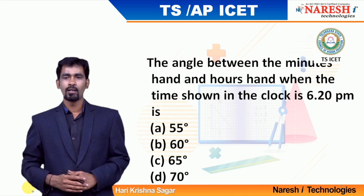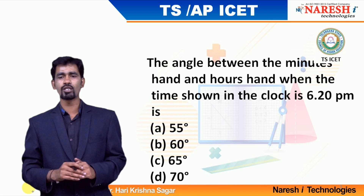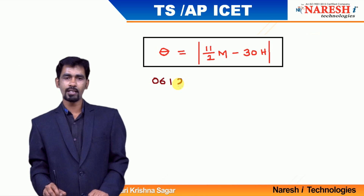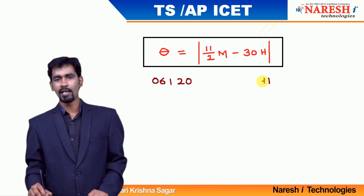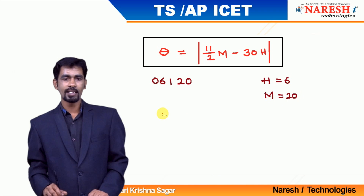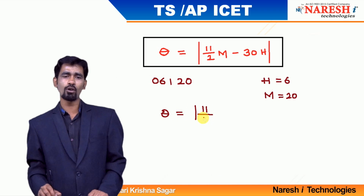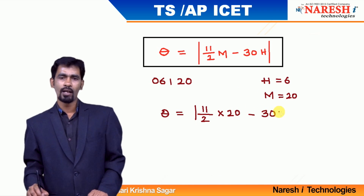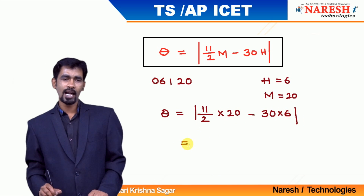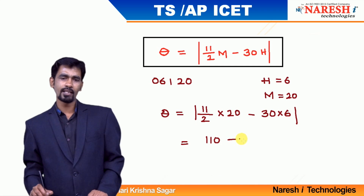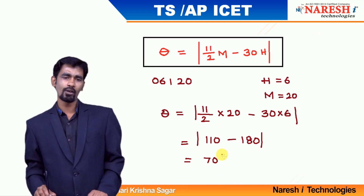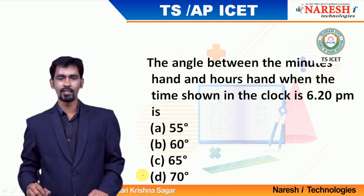Let us look at one more question. If the time is 6 o'clock 20 minutes, what is the angle between the minutes and hour hand? At 6:20, h value is 6 and m value is 20. Using the formula: theta equals 11/2 into 20 minus 30 into 6. That gives 110 minus 180, which gives a resultant of 70. So the angle between the minutes and hour hand at 6:20 is 70 degrees. Mark your answer choice as 70 degrees, which is option D.